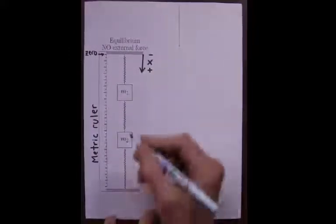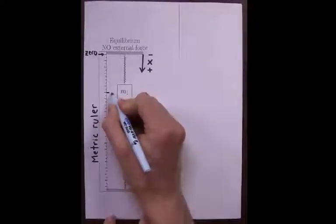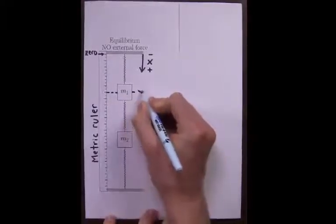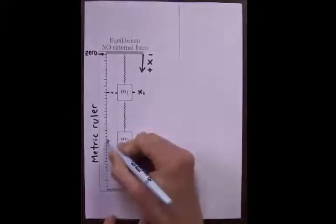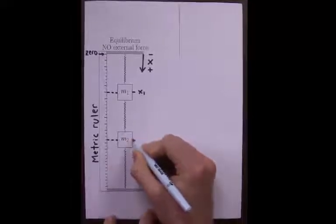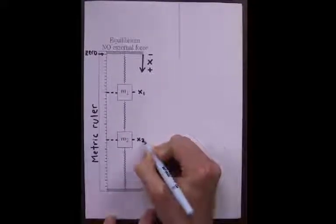And on the metric ruler, we mark that center position of mass one, labeling it x1. The center of mass two, we label x2.